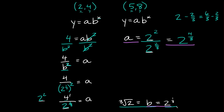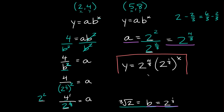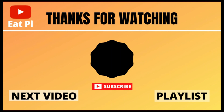Now we know what both a and b are equal to, so we can finally plug them into our exponential equation. So y is equal to 2 raised to the 4/3, times (2 raised to the 1/3) raised to the x. That would be your final answer. If you found the video helpful, definitely leave a thumbs up below, and if you have any questions or want to see other examples, just let me know in the comment section.